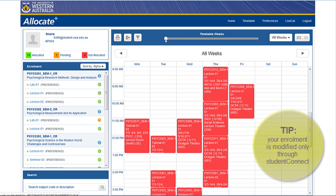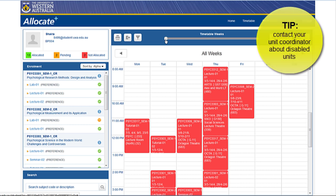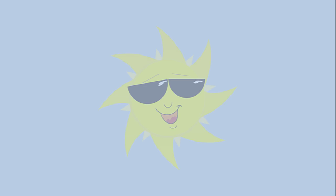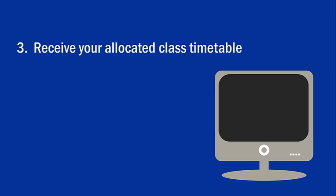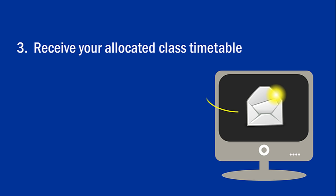If you have a disabled unit, contact your unit coordinator to discuss class registration. Once you've chosen preferences for your classes, you can sit back and enjoy your break. The allocation system will run and your personal timetable will be released around three to four weeks before semester begins.